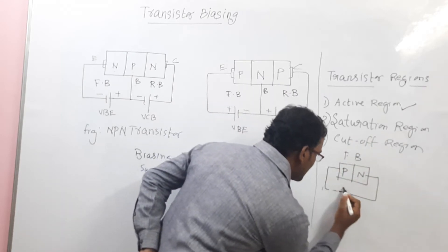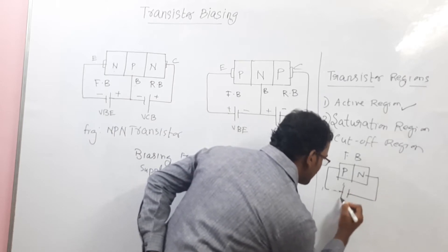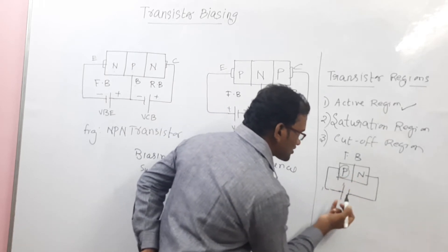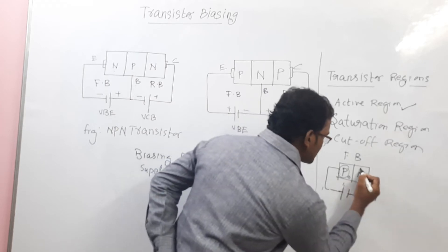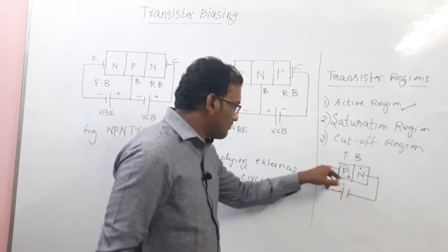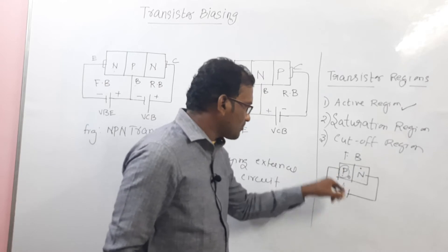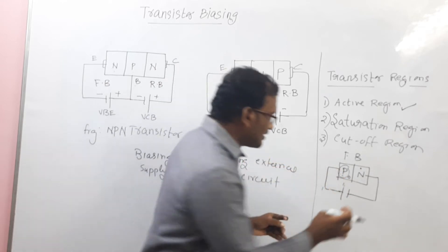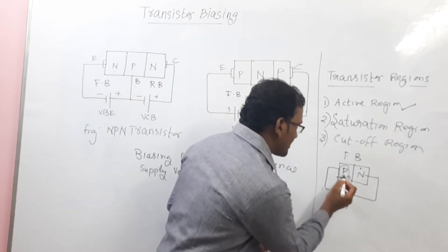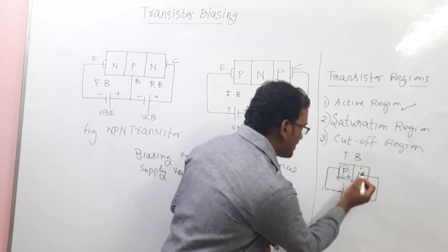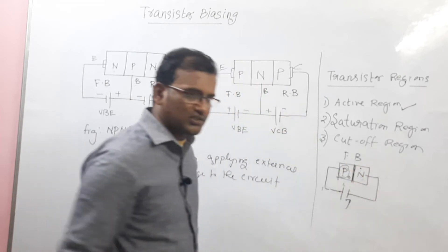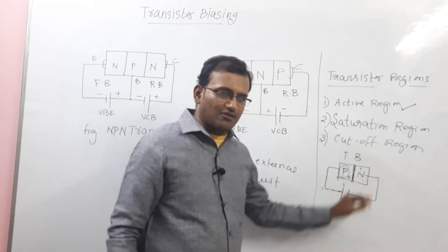P is going to connect to the positive terminal. N is going to connect to the negative terminal. In the P region, what charge carriers are present? Holes. In N region, electrons. Always, holes will repel with positive — positive-positive repel each other. Similarly, electrons-electrons also repel each other. So when increasing this voltage, holes move from P type to N type, and electrons move from N type to P type. Across the junction, recombination takes place. Then the current will flow in the case of forward bias.